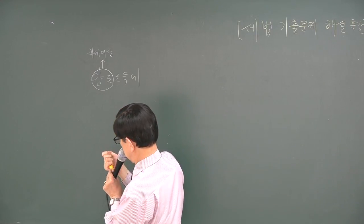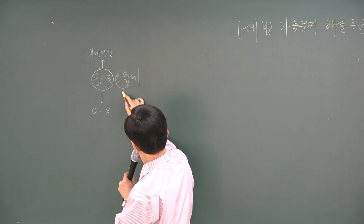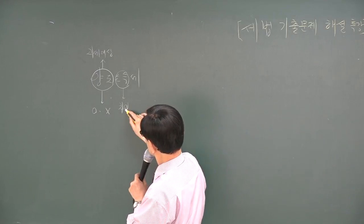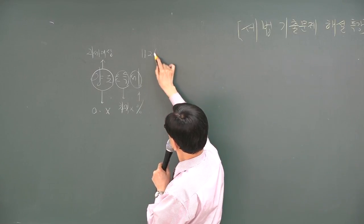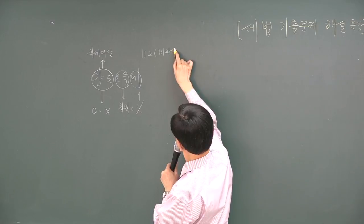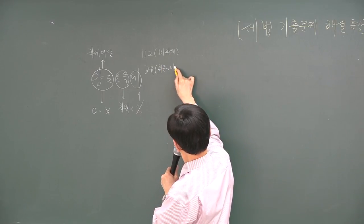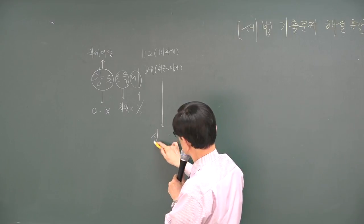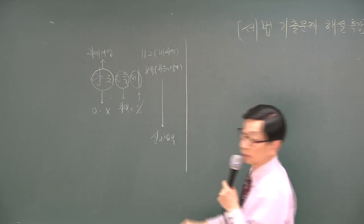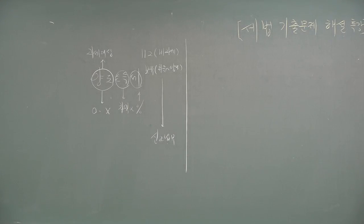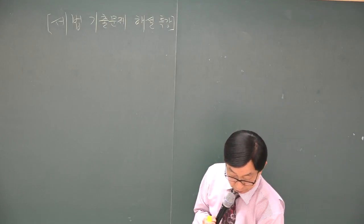양도에 대한 개념이죠. 양도로 보는 것과 양도로 보지 않는 것이죠. 소득하면 양도차익. 1세대가 1주택을 2년 이상 보유했다 - 비과세. 보유기간은 취득일로부터 양도일까지. 자진에서 신고하고 납부한다. 자, 교재 한번 보세요. 1번 봅니다. 양도소득세 몇 쪽이죠?